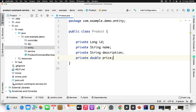Whatever data is in the command service is not present in the query service because both point to different databases. We need to sync both microservices. Whatever is inserted or updated in the command service needs to be sent to the query service. We can do this using Kafka: whenever an event is created or updated, immediately publish that event to Kafka so the query microservice can consume it and update its own database. Let's add the Kafka dependency to both microservices.